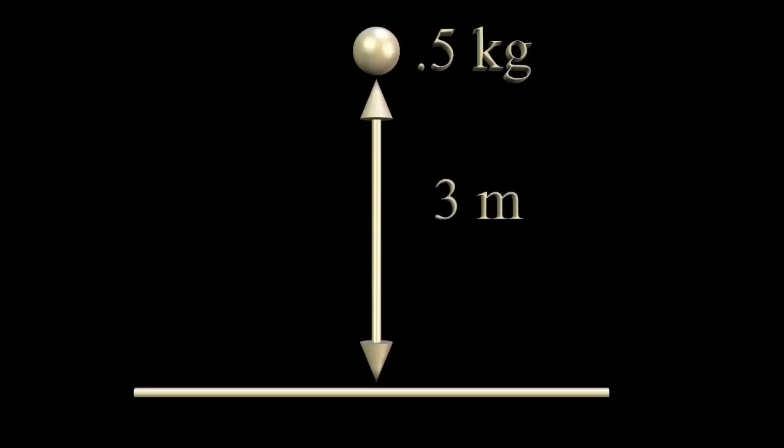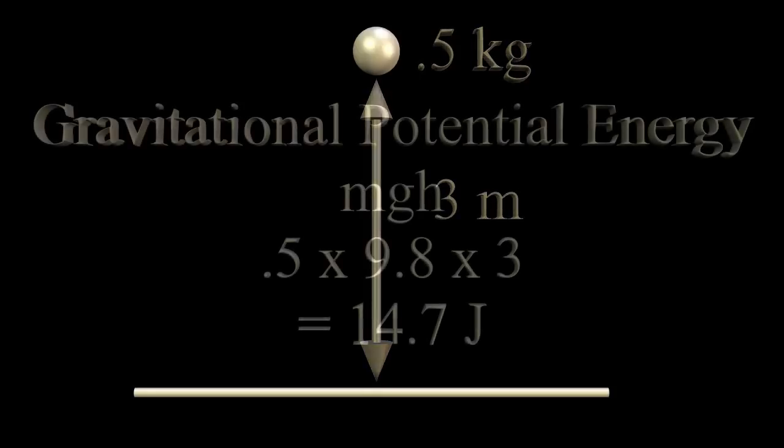In this example, we have a 0.5 kilogram ball sitting 3 meters above a reference point. Its gravitational potential energy is 0.5 kilograms times 9.8 meters per second squared. That's the acceleration due to gravity. Then this times 3 meters. This system represents 14.7 joules of energy.